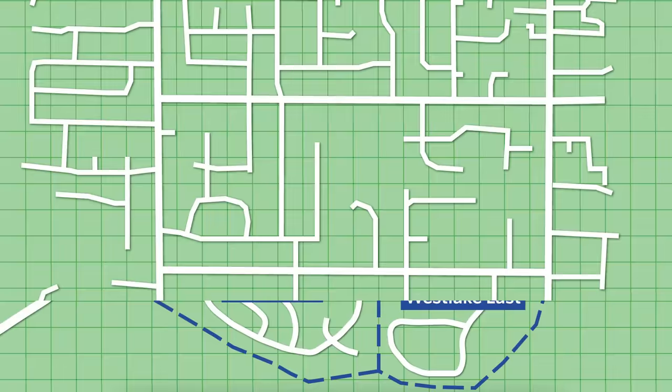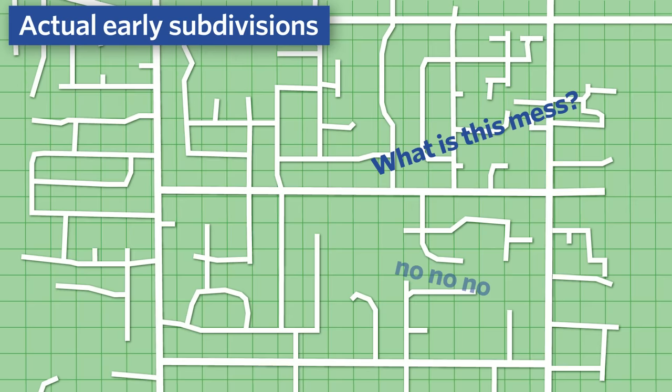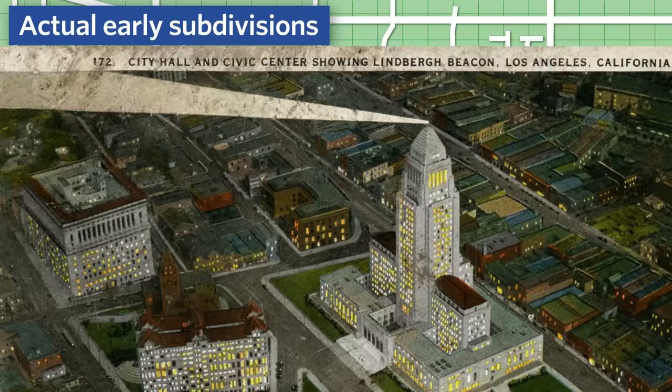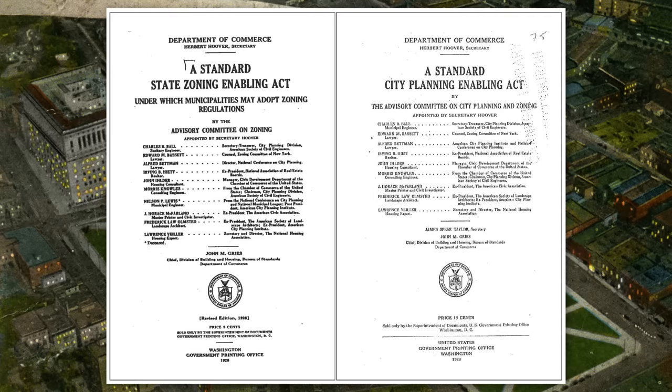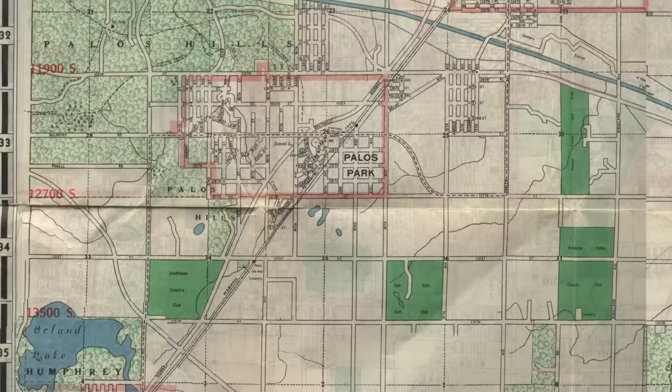The roads in these subdivisions would often not connect to each other, and their road networks were often not as well thought out. Cities at the time didn't have any way of forcing developers to design better street systems or cooperate with each other. The federal government eventually drafted a standard city planning enabling act in 1928 that states adopted. These rules allowed cities to adopt citywide street plans and regulate the design of subdivisions. So that tells us why we moved away from the grid, but it doesn't tell us how we got to the loops and cul-de-sacs of today.